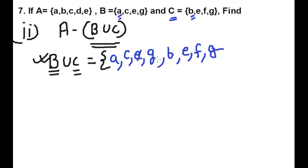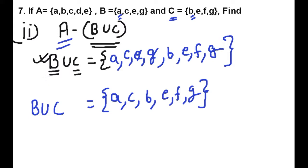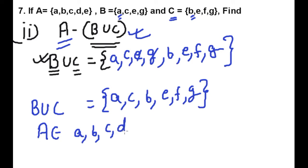But here E and G are repeating, so we will not repeat any element. The correct set for B union C is: {A, C, B, E, F, G}. This is our B union C. Now we have to find A minus (B union C), which means the elements only available in A, not in B union C. Elements of A are: A, B, C, D, E.